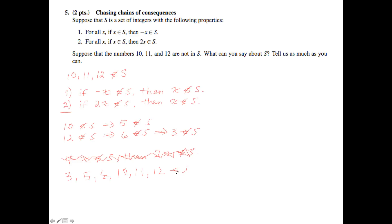We don't know anything beyond this. Other numbers, like 4, could either be in S or not in S, but these properties say nothing about 4 given the information that we know. So for all other elements, we actually don't know anything. We just know that 3, 5, 6, 10, 11, and 12 are not in S.